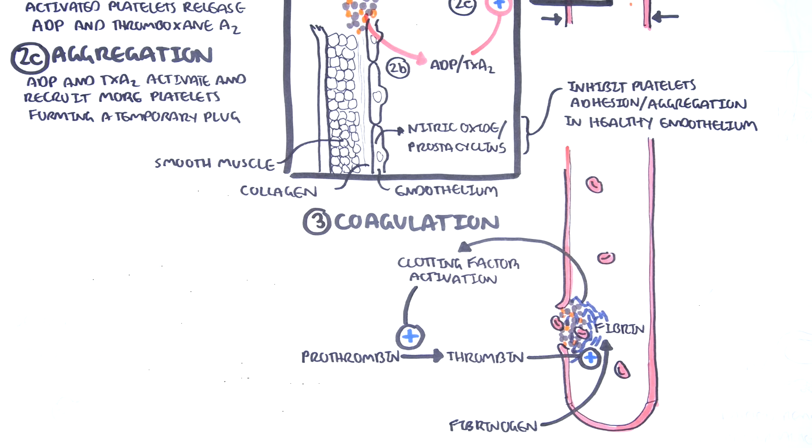Vasoconstriction, platelet plug formation, and coagulation complete hemostasis. After the tissue heals, the fibrin is slowly cleared up, and a new lining of endothelial tissue is formed.